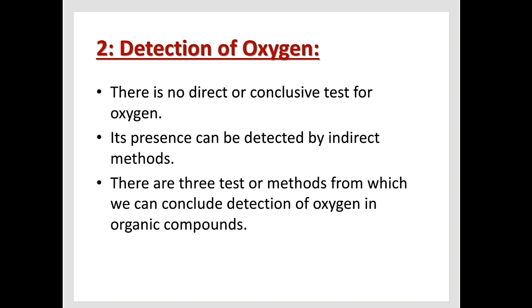After carbon and hydrogen, the third detection is detection of oxygen. Oxygen ki detection baki sab elements se different hai — oxygen's detection is different from all other elements. There are three points. First: there is no direct or conclusive test for oxygen. Second: its presence can be detected by indirect method. Third: there are three tests or methods from which we can conclude the detection of oxygen in an organic compound.